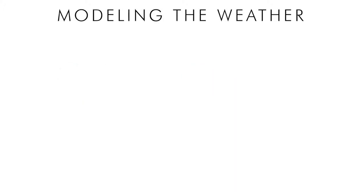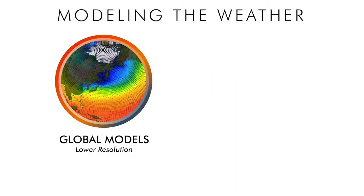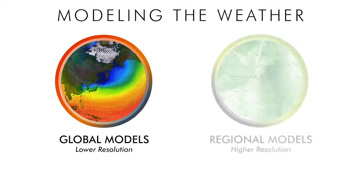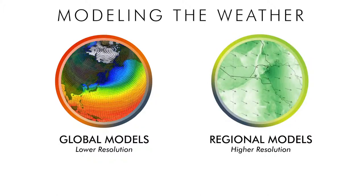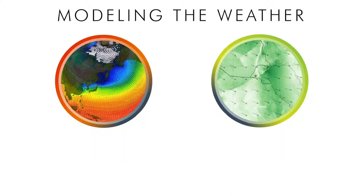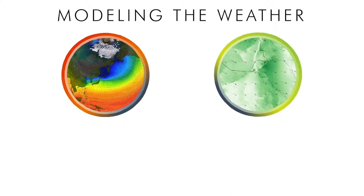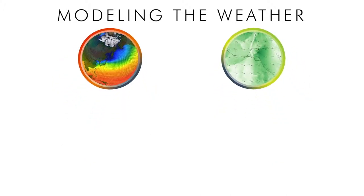Weather models are a foundational input to the prediction system. We use global models, which predict the weather over the entire planet at lower resolution. We also run a specialized regional model, focused on a smaller area over Kuwait, and run at higher resolution to better simulate details of the wind and cloud fields.